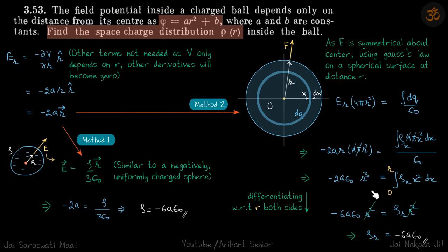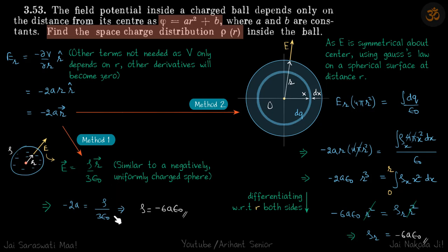We now differentiate both sides with respect to r — this is the standard mathematical technique for resolving these kinds of equations. On the right side, everything in terms of x except dx becomes r, so we get ρ(r) × r². On the left side, differentiating −2a × (4π/3) × r³ with respect to r gives −6aε × r². This yields ρ = −6aε, confirming the same result. This standard systematic method is the one you should always use.